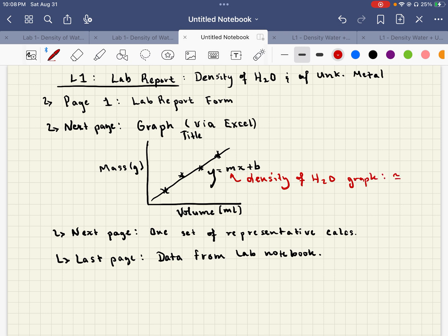And that should be approximately one gram per mil. If it's not, then you've forgotten to subtract the mass of your empty beaker from the rest of your beaker plus water values. And I'll show you that in a minute.